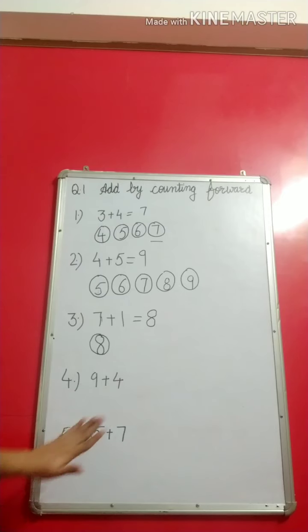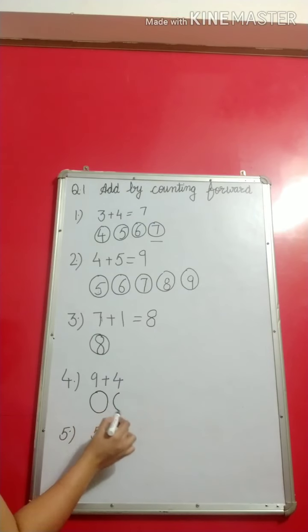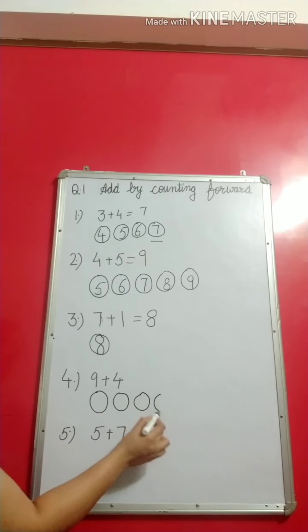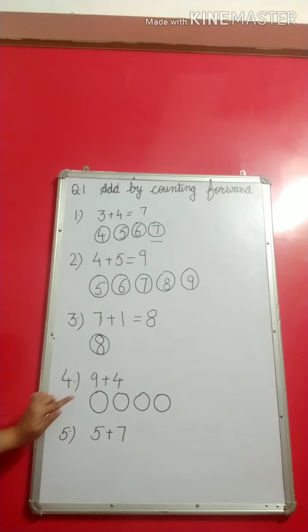So this is the way we write the counting from the next number. Let's look at the next question. It is written 9 plus 4. What is written in the second number? 4. The first number is what? 4. So how many circles will we draw this time? 4. From which number will you start counting? The number written here is 9. I will start counting from the next number after 9.